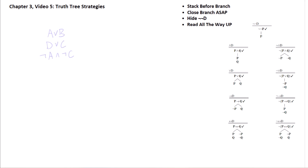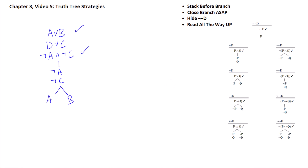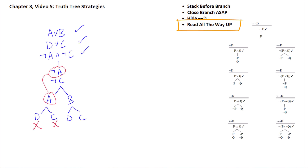For an example of closing a branch as soon as possible, take these three formulas in the trunk of the tree. We stack before we branch, then we have our choice of either disjunction. Suppose we take A-or-B and then do D-or-C next. When we read all the way up the branch we see we've got an A here and a not-A, so both these branches close. Reading up the third and fourth branches, we've got a C and a not-C, so that branch closes and the third branch stays open.